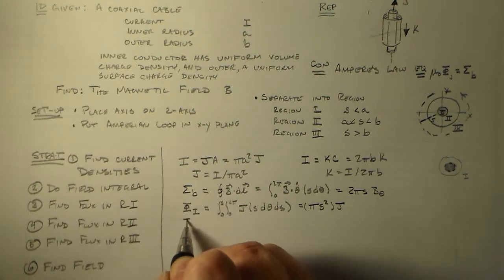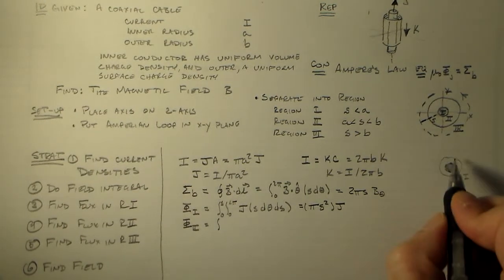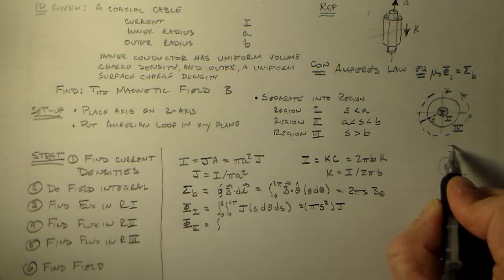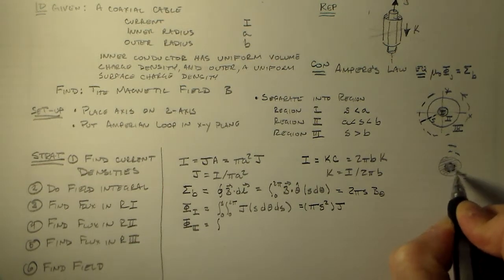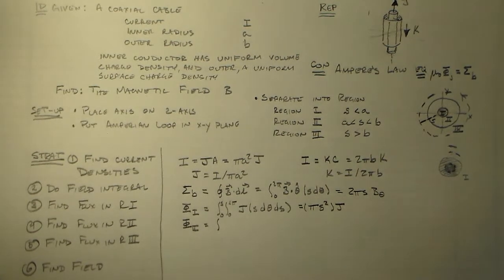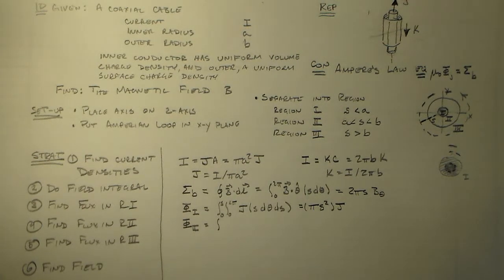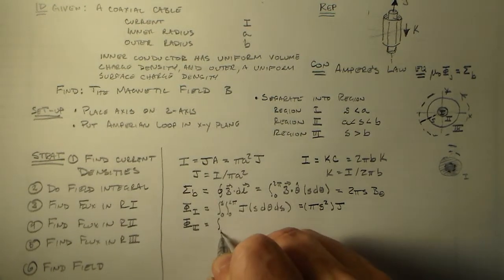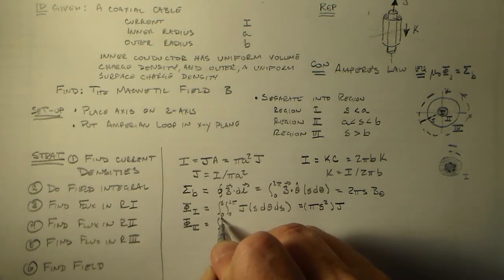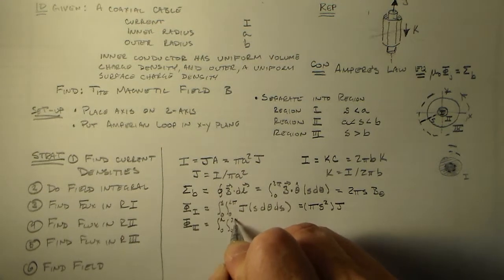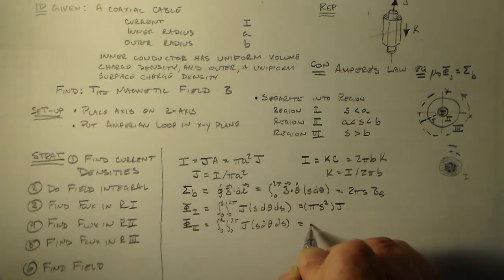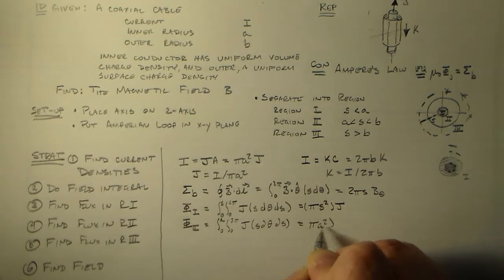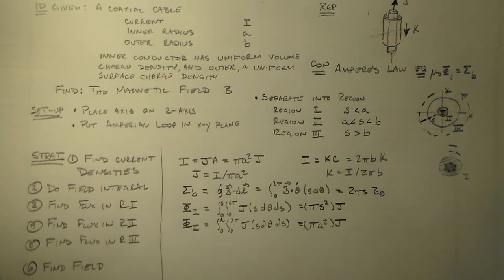For Φ₂ — if S is out in region two — we're getting the entire inner wire plus empty space that doesn't carry any current. So we just integrate to the edge of the wire, from 0 to A, which gives π·a²·J. We already know what that is.